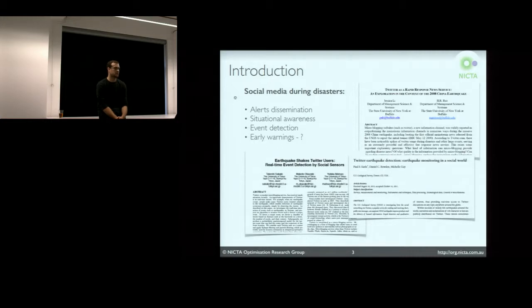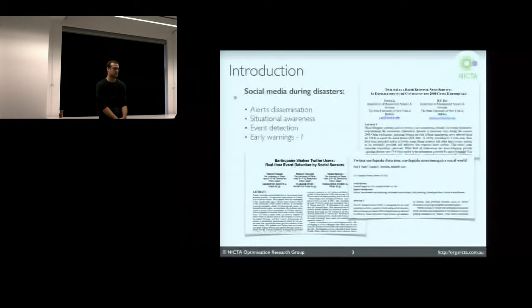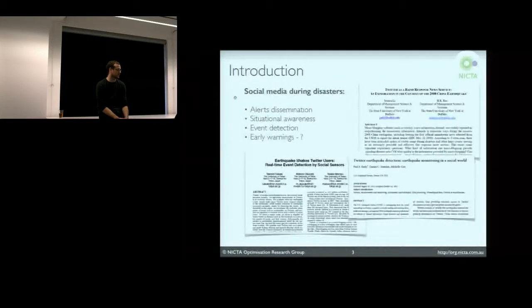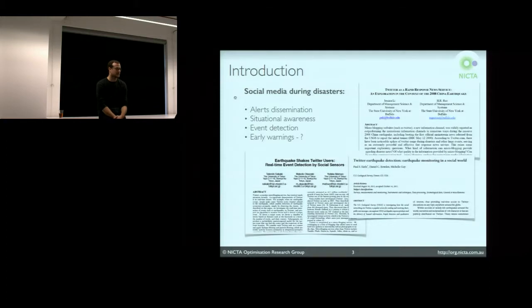The last obvious but very promising application is actually event detection. Twitter has been used for monitoring and detecting earthquakes, in the United States and in Japan. In one particular example, this paper by Sakaki and co-authors implemented a working system where, based on triangulation from tweets, they can pinpoint the location of an earthquake and do it almost 15 minutes earlier than the official reports from the relevant seismic agency in Japan. It is probably a case of verification rather than actual precision, but nonetheless it can be done.